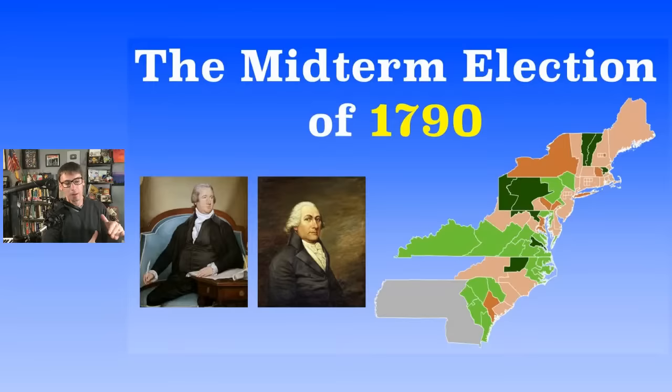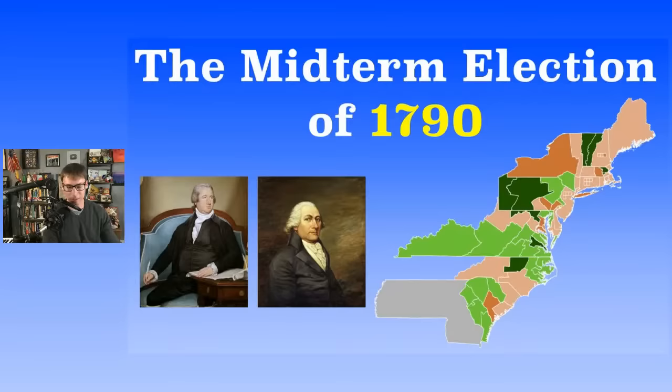The reason is because the vice president is the head of the Senate, and the vice president would show up a lot more back in the day — just to kind of hang out as the president of the Senate. So for the first half or more of these midterm elections, instead of a Senate majority leader, you'll see the president pro tempore. The first one is John Langdon — he was the second in command in the Senate.